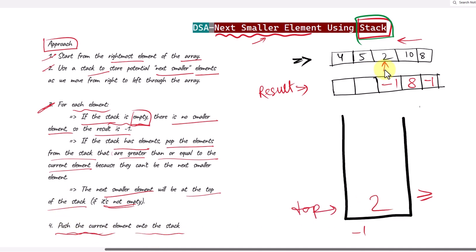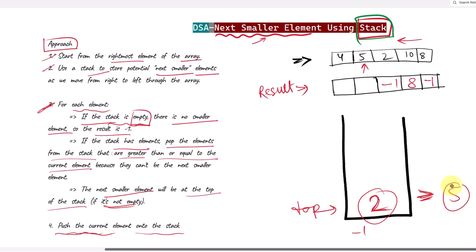Now we work with the element 5. We check if the stack top element is greater than or equal to 5. The stack top is 2, which is not greater than or equal to 5, so 2 is the next smaller element for the value 5. The result will be 2, and then we push 5 onto the stack.